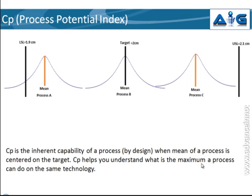Now consider three different possibilities for this same process. In scenario A, the process mean lies somewhere around the LSL — it's off the target. In scenario B, the mean lies exactly on the target. In scenario C, the mean is again off target, but this time toward the USL. These are three different conditions under which the same process can work.